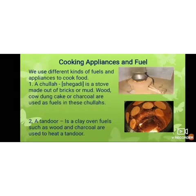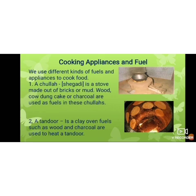Now we are going to learn about cooking appliances and fuel. Children, what do we mean by appliance? An appliance is a device which is specially designed to perform a special task. The following appliances are specially designed to cook food. The first appliance is a chula, which is also commonly known as shigdi. It is made out of bricks and mud, and it requires wood, cow dung cake, or charcoal as a fuel.